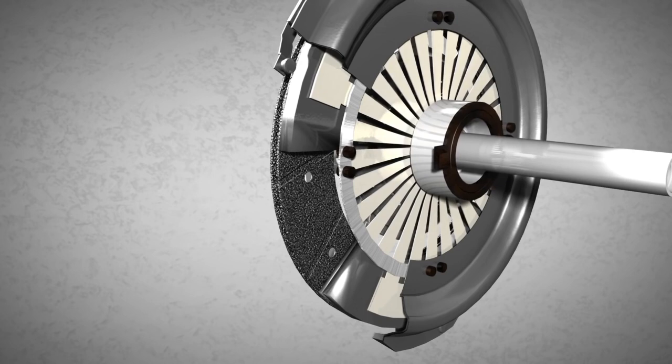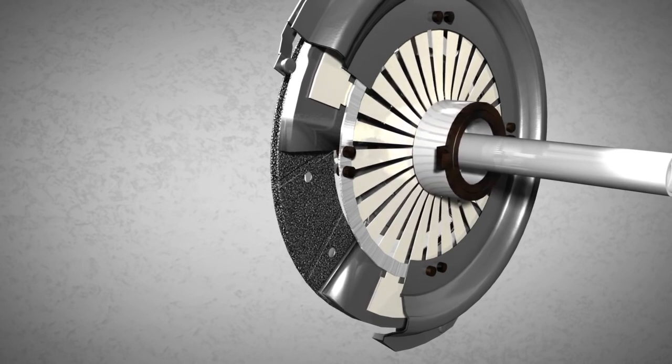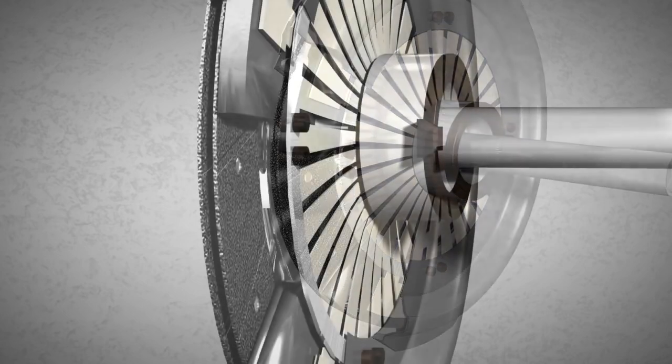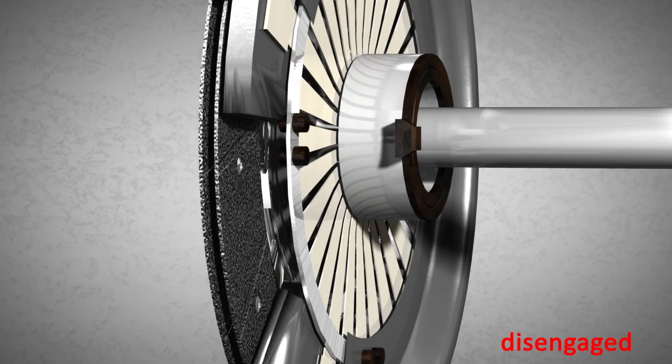When the release bearing is pushed into the spring, the inner portion of the spring is moved in the direction of the clutch disc, whereas the other portion of the spring is moved in the other direction.